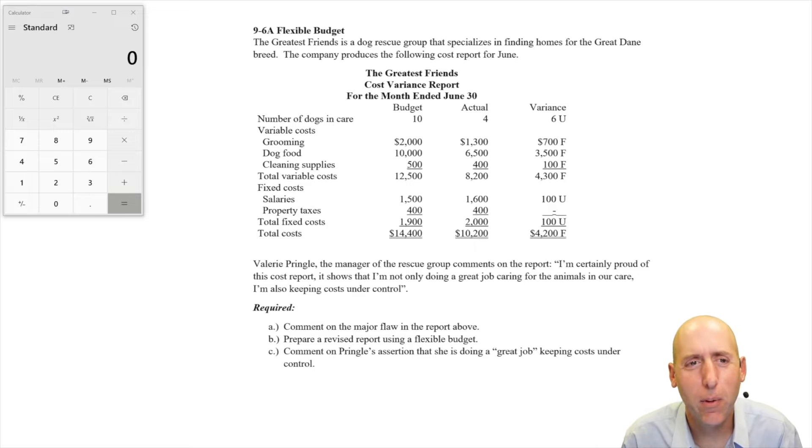Let's take a look at problem 96A, a flexible budget. This sort of combines variance analysis with budgeting, so we'll see how we do. The Greatest Friends is a dog rescue group that specializes in finding homes for the Great Dane breed, beautiful dogs. The company produces the following cost report for June, the Greatest Friends cost variance report, with number of dogs in care, variable costs, fixed costs, and total costs.